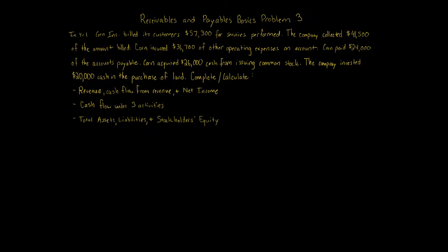Receivables and Payables Basics, Problem 3. In year one, Korn Inc. billed its customers $57,300 for services performed. The company collected $41,500 of the amount billed. Korn incurred $36,700 of other operating expenses on account. Korn paid $24,000 of the accounts payable. Korn acquired $26,000 cash from issuing common stock. The company invested $20,000 cash in the purchase of land. Complete and calculate the following.